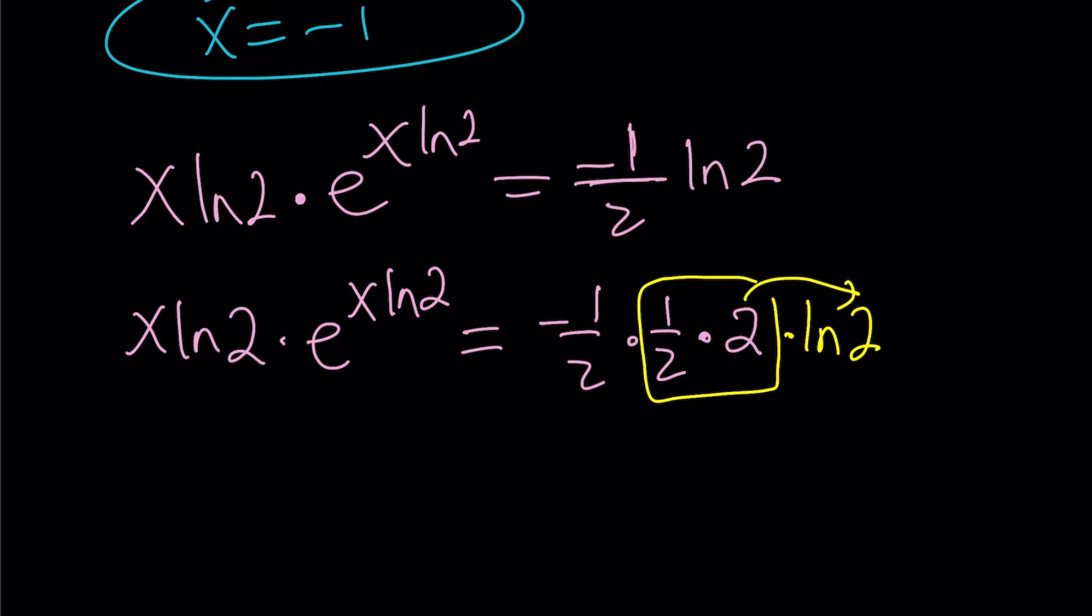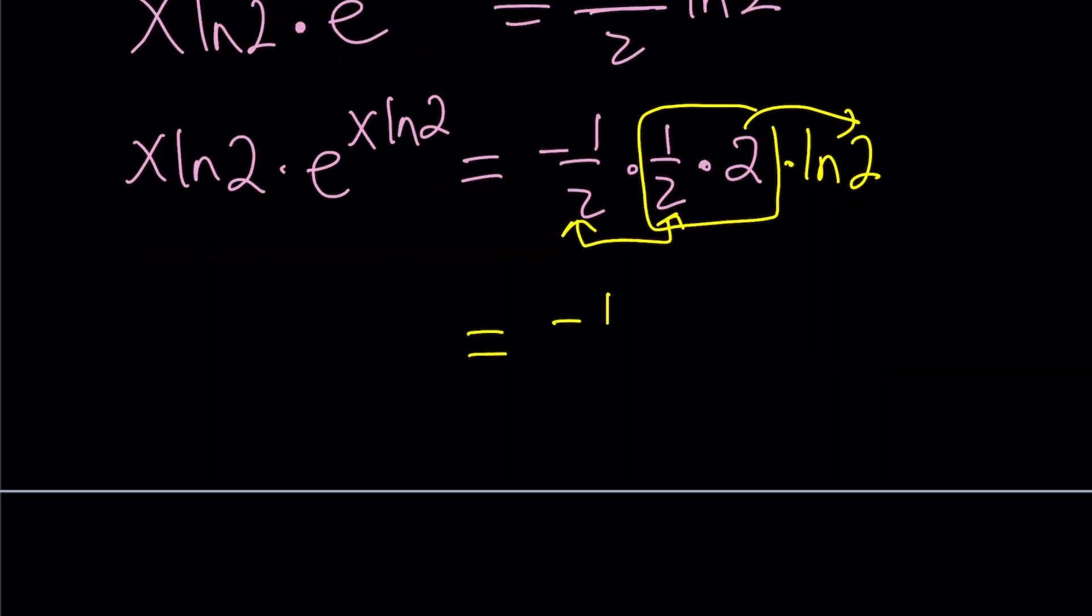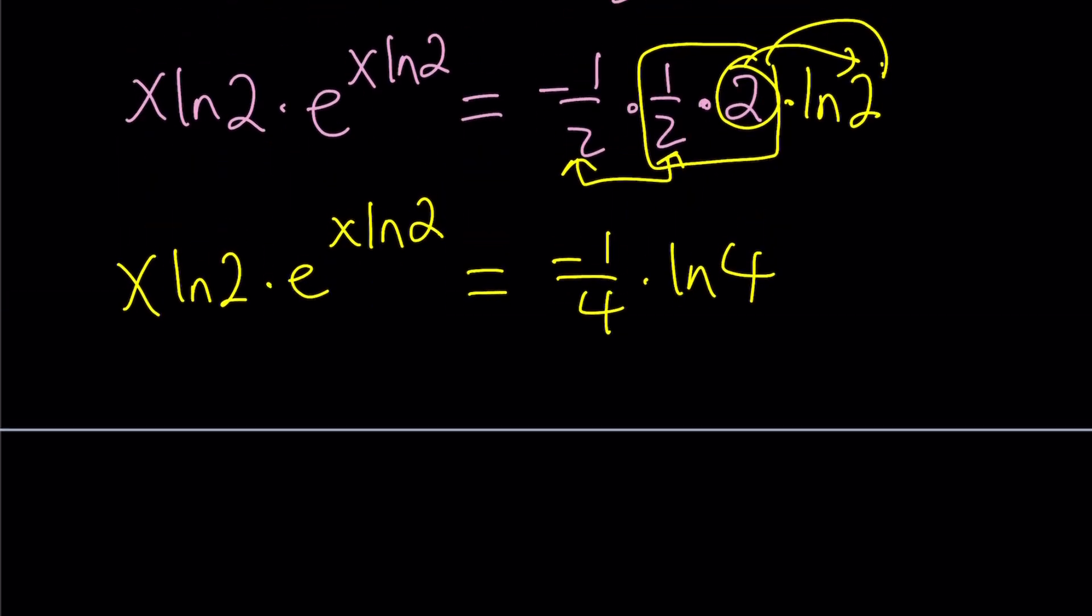And now this 2 ln 2 and these two will be grouped together. This is going to be negative 1 fourth, and this is going to be ln 2 squared, which is ln 4. And now we can put it into the t to the t format again, but this time with the 4s.